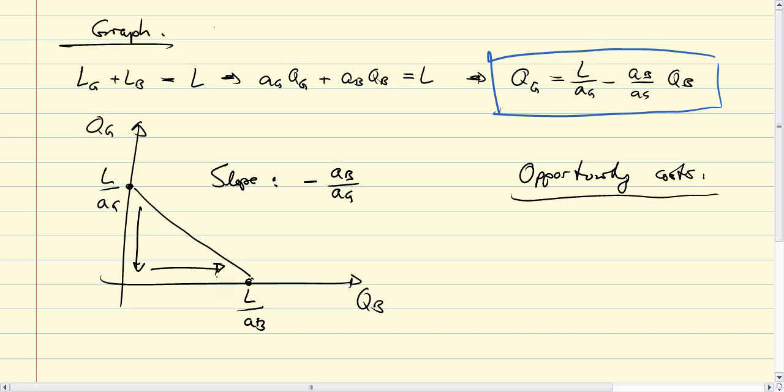In fact, the opportunity cost to gain one unit of butter is exactly AB over AG. So the opportunity cost of one unit of butter is AB over AG guns.